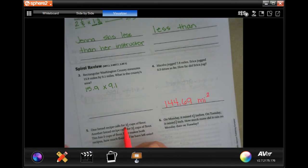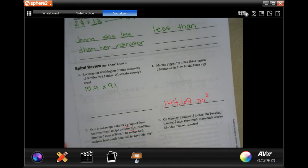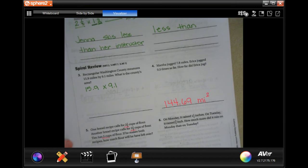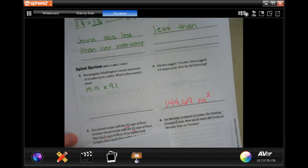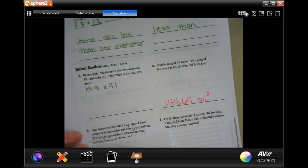One bread recipe calls for two and a third cups of flour. Another bread recipe calls for two and a half cups of flour. Kim has five cups of flour if he makes both recipes. How much flour will he have left over? Well, let's first add up how much flour he needs for them.